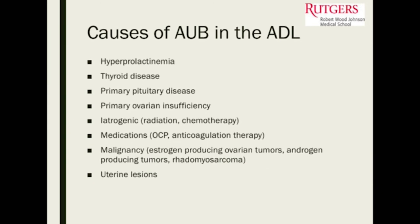Other causes of abnormal uterine bleeding include hyperprolactinemia, thyroid disease, primary pituitary disease, and primary ovarian insufficiency — which is usually more associated with amenorrhea. Iatrogenic causes include things that may affect platelets, CBC, radiation, chemotherapy, and medications including birth control pills or Depo-Provera — which is why the history is so important.